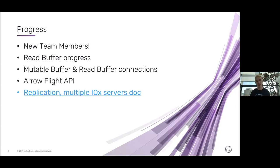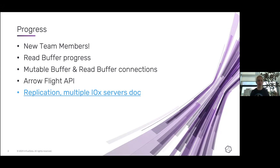Over the last week or so, we've had an internal discussion — some of which has been on GitHub issues and a lot over Zoom — about how we're going to handle a bunch of IOx servers working together: how they will replicate data, how the write-ahead logs work across them, and how you'll be able to split roles between servers receiving writes versus servers receiving queries. Dom wrote up a document capturing all of that, and I will put a link to that public doc on Twitter right after I finish speaking.